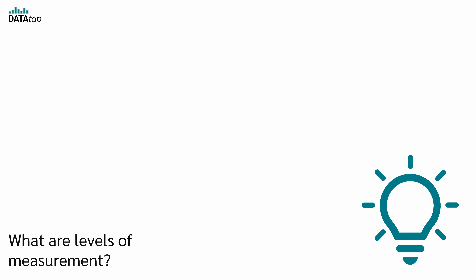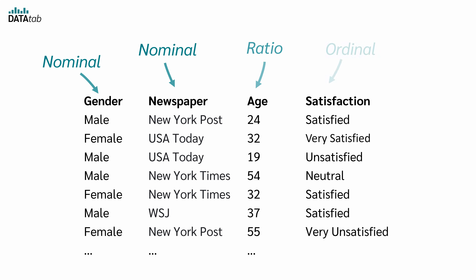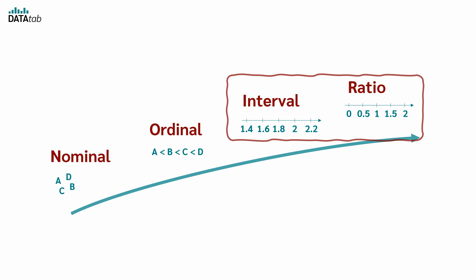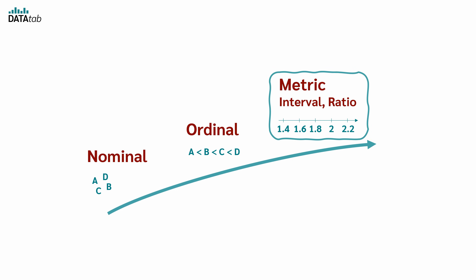What are levels of measurement? Levels of measurement refer to different ways that variables can be quantified or categorized. Every variable in a dataset corresponds to one of the four primary levels of measurement: nominal, ordinal, interval and ratio. In practice, interval and ratio data are often used to perform the same analysis, so the term metric level is used to combine these two levels.